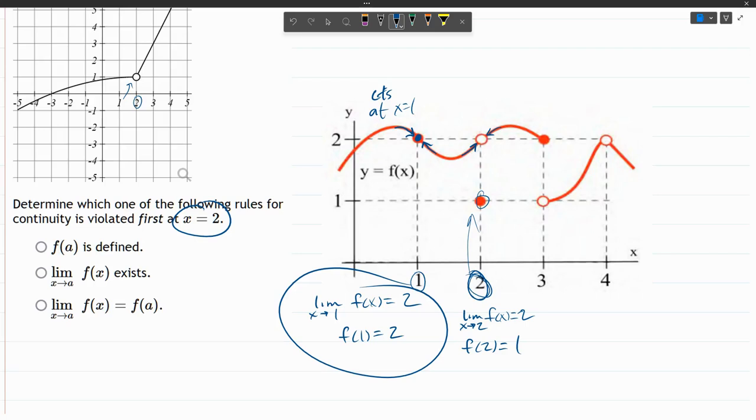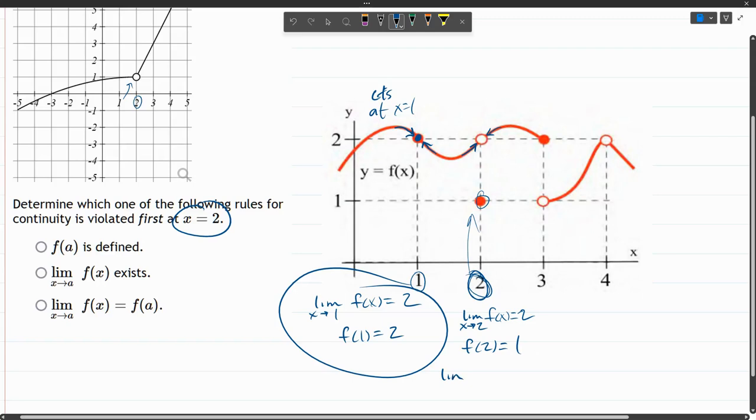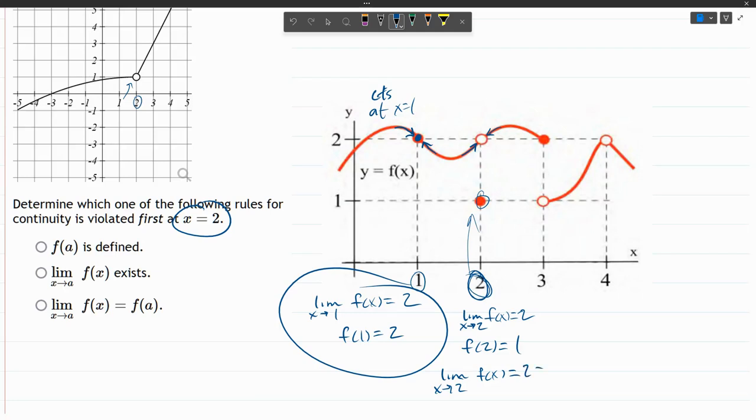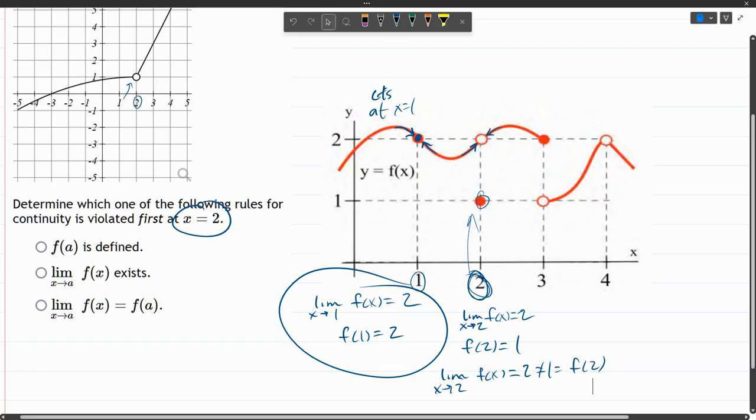And two and one are not the same number, which means I can write limit as x approaches two, f of x is two, which is not equal to one, which is f of two. Now both of these exist, but they're not equal.